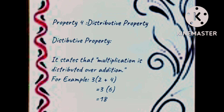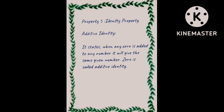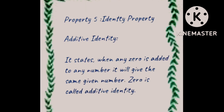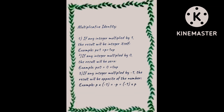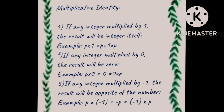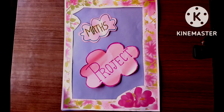The fourth is distributive property with information about it. The fifth is identity property — first, additive identity and its information, then multiplicative identity and its information. So this was the maths project on properties of integers.